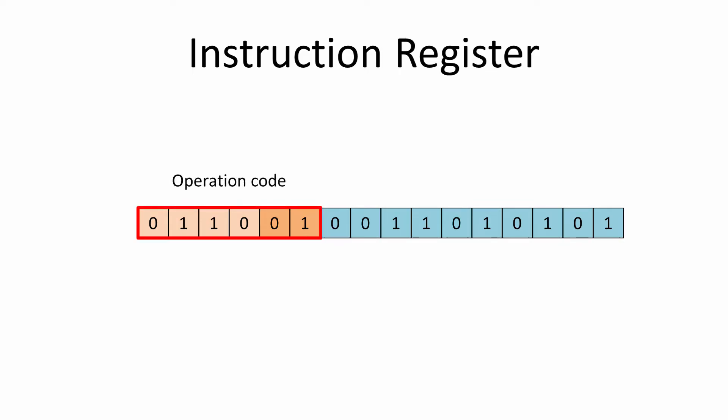Each instruction includes a fixed number of bits to represent the operation, such as add, subtract, load or store — the so-called operation code. There's also a fixed number of bits to identify the operand or the operands that will be operated upon. An operand could be a value, a CPU register, or a memory address. This is also sometimes referred to as the address field.